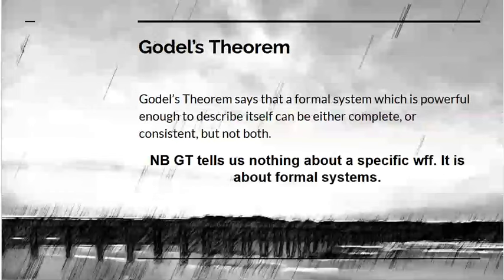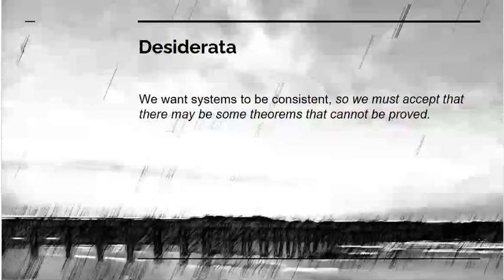All of this comes from a program set out at the start of the 20th century by the German mathematician Hilbert. His program was about establishing formal systems that were powerful enough to describe mathematics and would have these properties. That project failed because of Gödel and Turing. Gödel's theorem says that a formal system powerful enough to describe itself can be either complete or consistent, but not both. It's important to realize this says nothing about a specific well-formed formula. It is a property of formal systems, which becomes relevant once we start thinking about the economy.